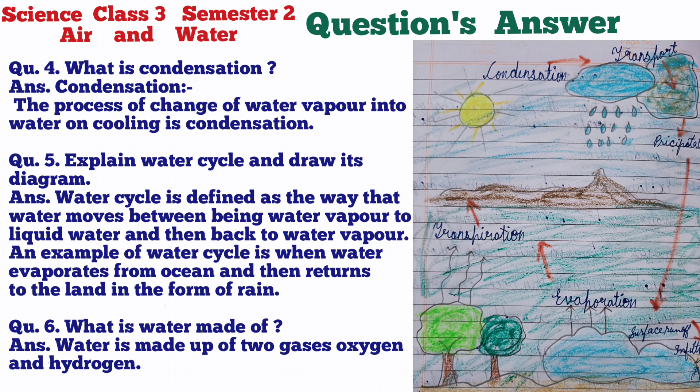Question 6: What is water made of? Answer: water is made up of two gases — oxygen and hydrogen.